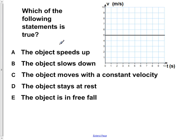Which of the following statements is true? A. The object speeds up. B. The object slows down. C. The object moves with a constant velocity. D. The object stays at rest. Or E. The object is in free fall.